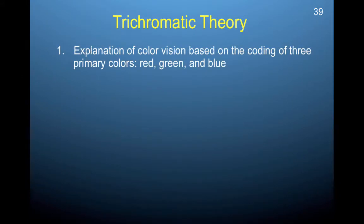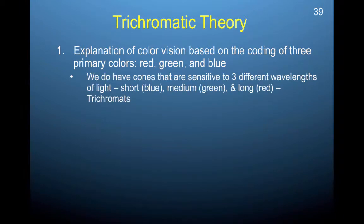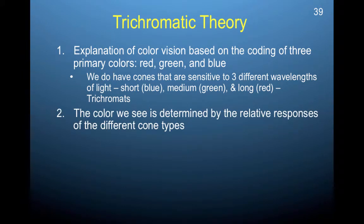The trichromatic theory is an explanation of color vision based upon the coding of three primary colors: red, green, and blue. We have cones that are sensitive to three different wavelengths, which supports the trichromatic theory. The color we see is determined by the relative responses of the different cone types. Each cone has a peak responsiveness to a particular wavelength, but also perceives things a little bit shorter and longer than that wavelength. So the relative responsiveness of the different cones could give rise to nuances in color.